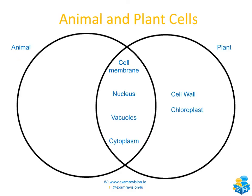We can summarize what we've looked at by drawing a Venn diagram. Anything in the center is common to both plant and animal cells — the cell membrane, the nucleus, the vacuoles, and the cytoplasm are common to both. But the plant cell has a cell wall and a chloroplast, which the animal cell doesn't have.